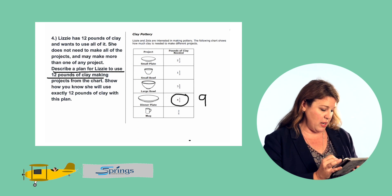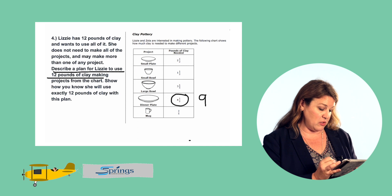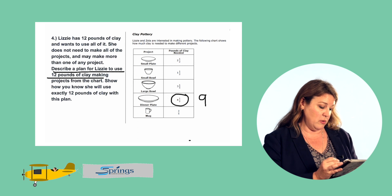So let's go back to the chart and see what else she could make that gets us closer to three. The large bowl is too much. It's three and one fourth. Small plates, two, too little, two and a half.